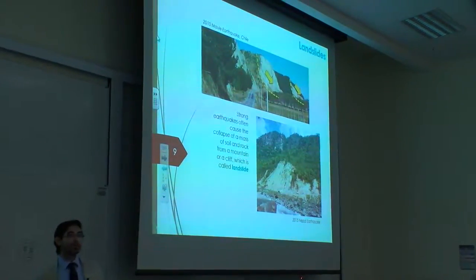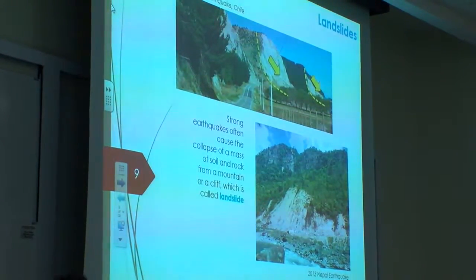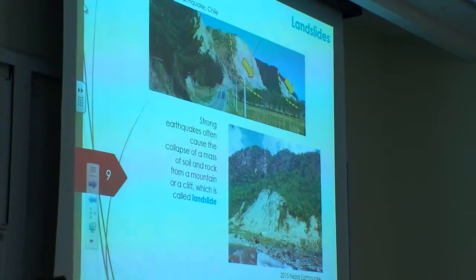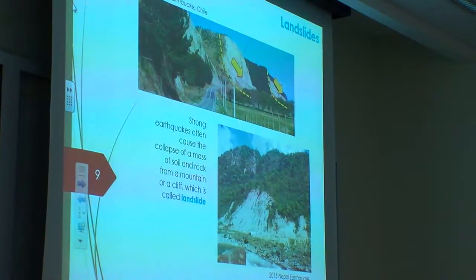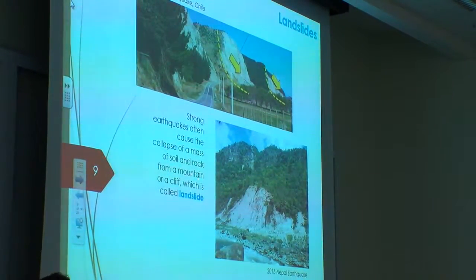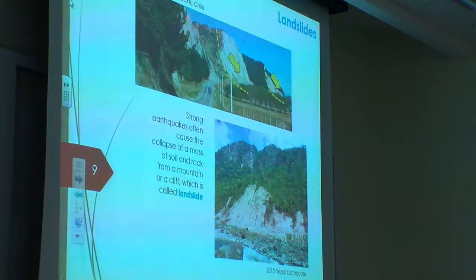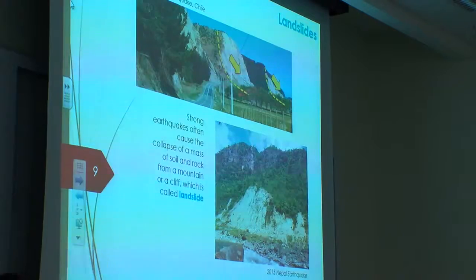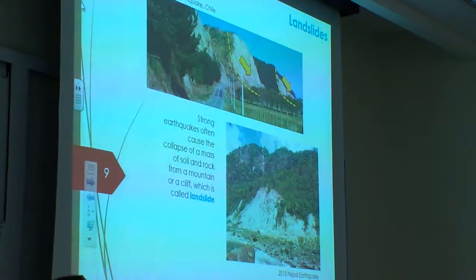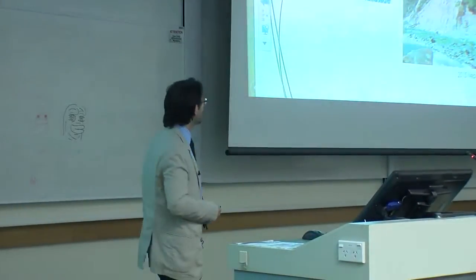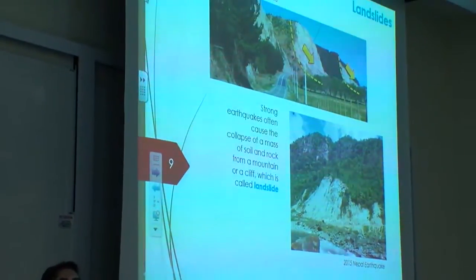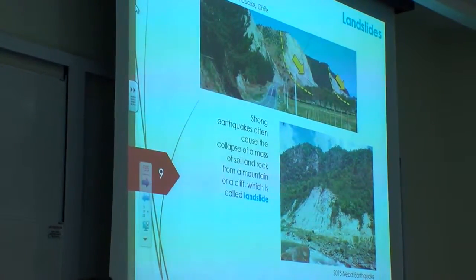A typical geodisaster caused by an earthquake is the so-called landslide — a very large mass of soil and rocks that falls from a mountain or cliff. This is the case of Chile, and this is the case of Nepal — two places I visited after an earthquake. You can see how big the amount of collapsed material is, and there are roads here that give you a sense of the socioeconomic impact. In Nepal, this is the only road connecting several villages, and every kilometre you can expect a landslide — making access for emergency purposes very difficult.